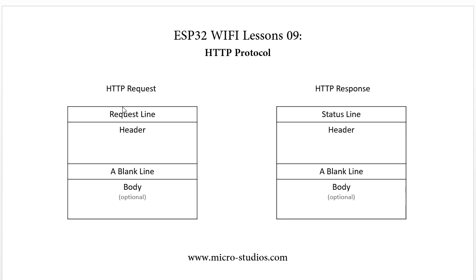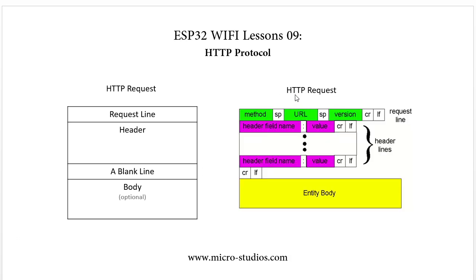Next, let's take a look at the detailed data format for the HTTP request in every part. So the detail format is like this — this is the HTTP request. For the first request line, it has a method, then one space, and then the URL — the HTTP link URL — then one space, and then the HTTP version. After that, it changes to a new line. So this is the request line.